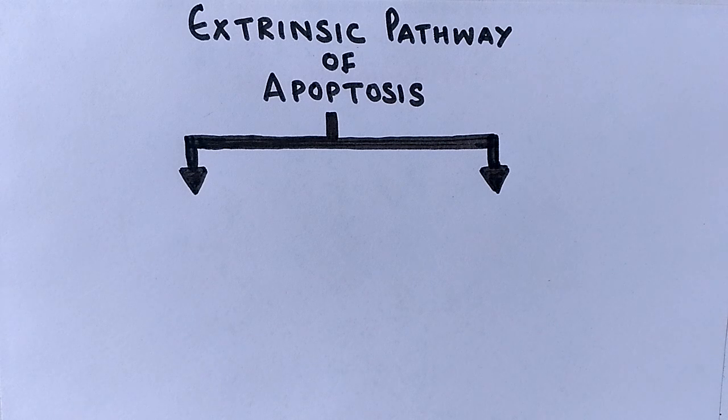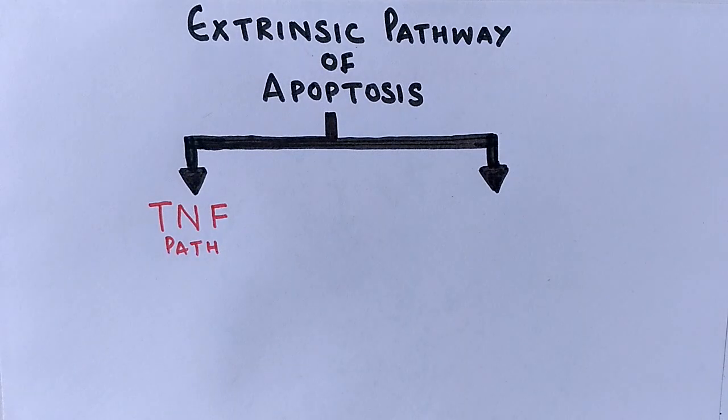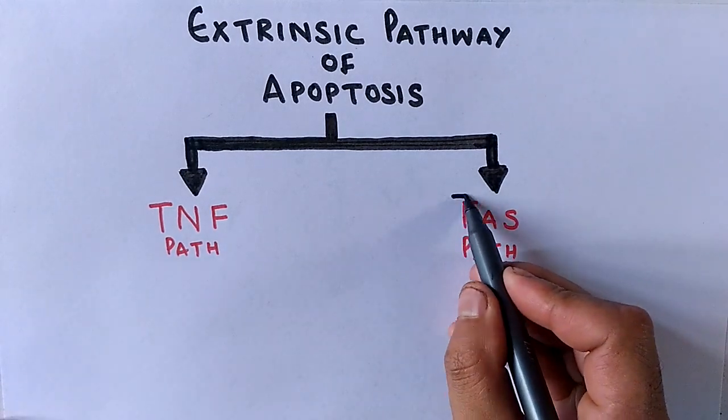For convenience, we divide the extrinsic pathway into two paths based on the kind of signaling molecules and receptors. First one is TNF path, tumor necrosis factor path, and the other one is FAS path, first apoptosis signal path.